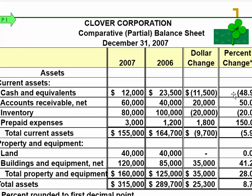As a manager, you can zero in on items with higher percentage changes. For example, one item shows 150%, but the dollar amount was only $1,800, so it may not be that significant. Still, horizontal analysis gives us places to focus, and that's exactly what's important for managers.